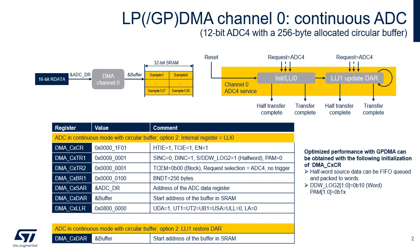In the CX TR2 register, the transfer complete event occurs when a block is transferred. The request input is selected — here it is ADC4 — while no trigger is used. In the CX SAR register, the address of the ADC data register is programmed. In the CX DAR register, the start address of the buffer in memory is programmed.